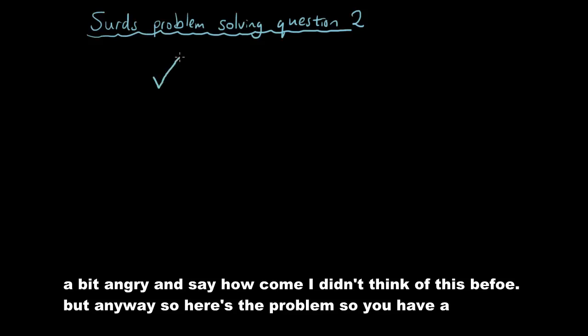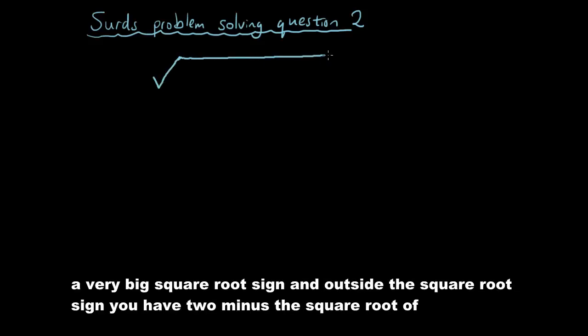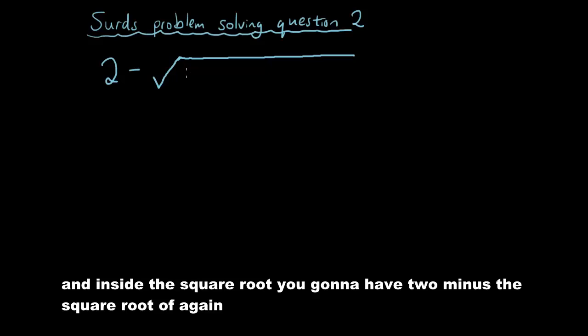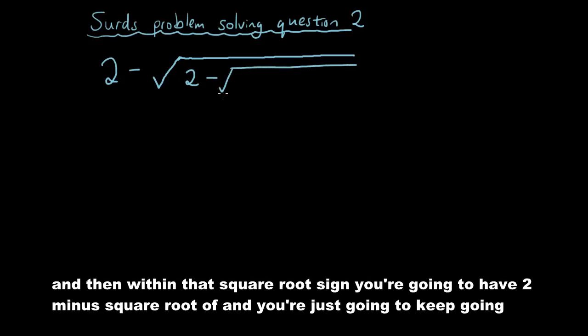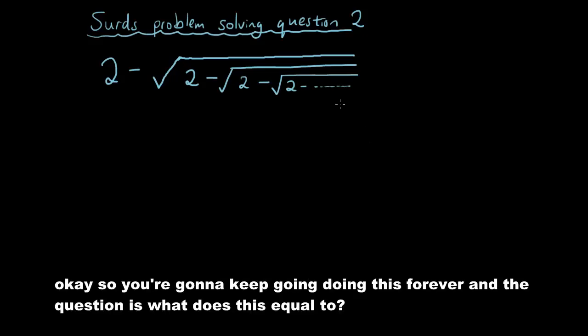You have a square root sign, a very big square root sign. Outside of the square root sign you have 2 minus the square root of, and then inside the square root you're going to have 2 minus the square root of again. Within that square root sign you're going to have 2 minus square root of, and you're just going to keep going to infinity. So the question is, what does this equal to?